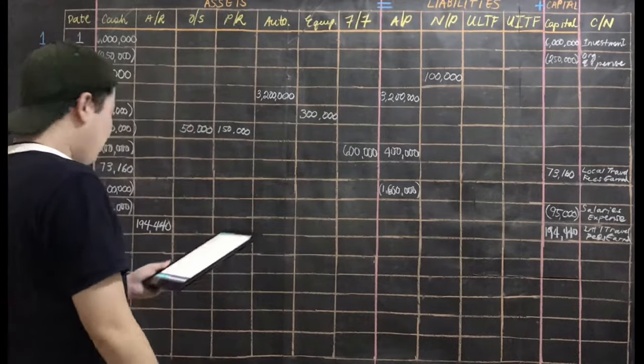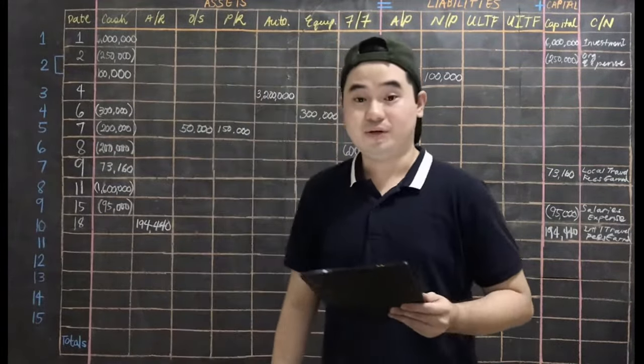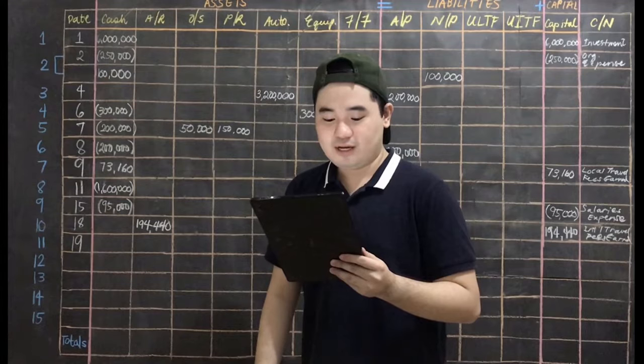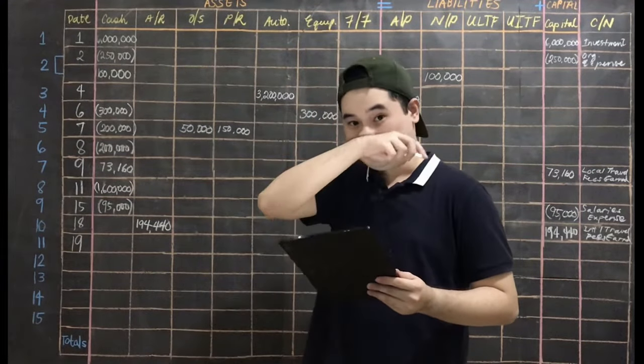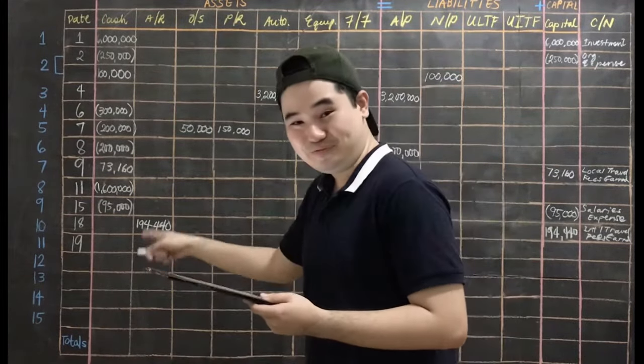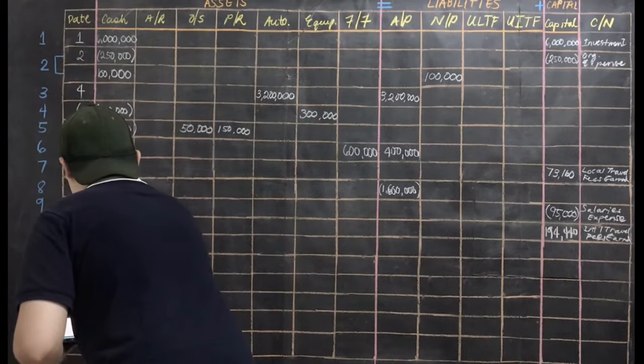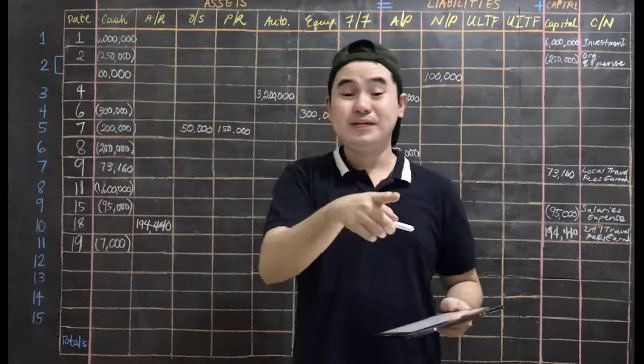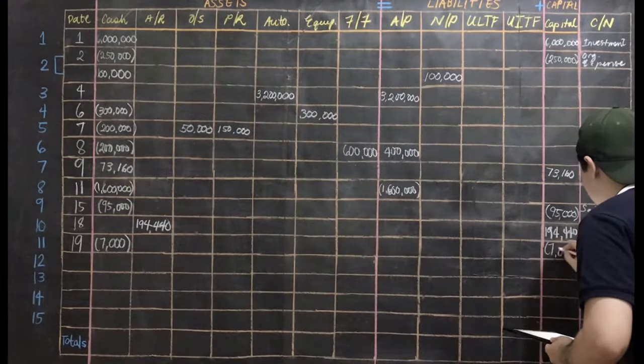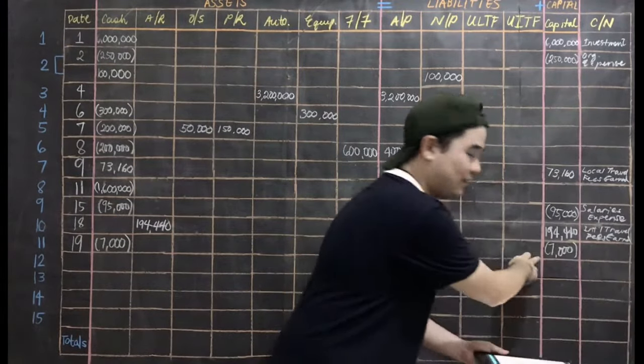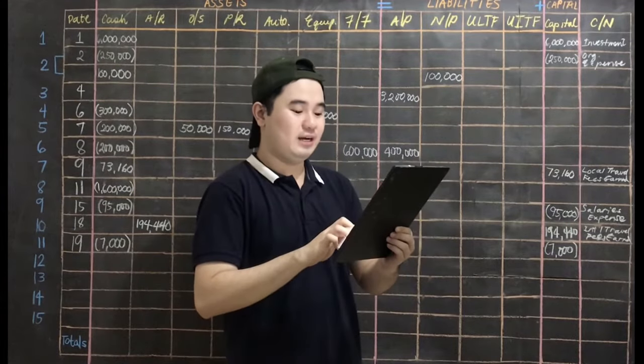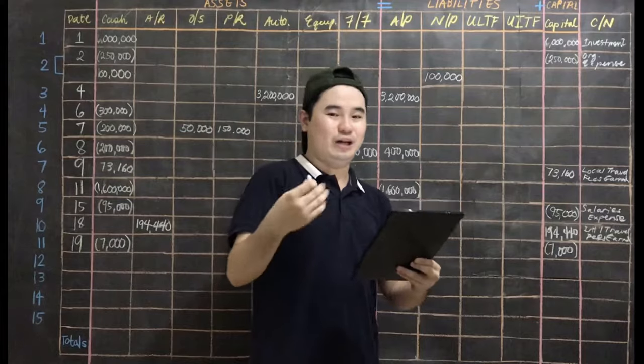Transaction number 11 happened on April 19. Paid 7,000 for minor repairs of automobile, cash payment. You paid 7,000, so negative 7,000. That is an expense, so your capital will be affected negatively. Negative 7,000. What do we call that? Repairs and maintenance expense because you had the automobile repaired.